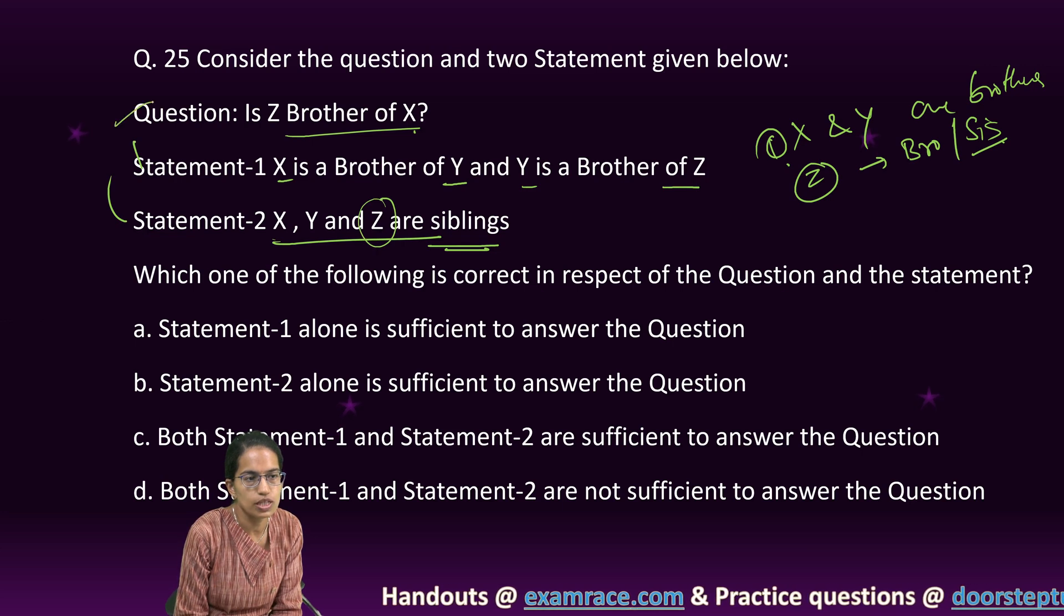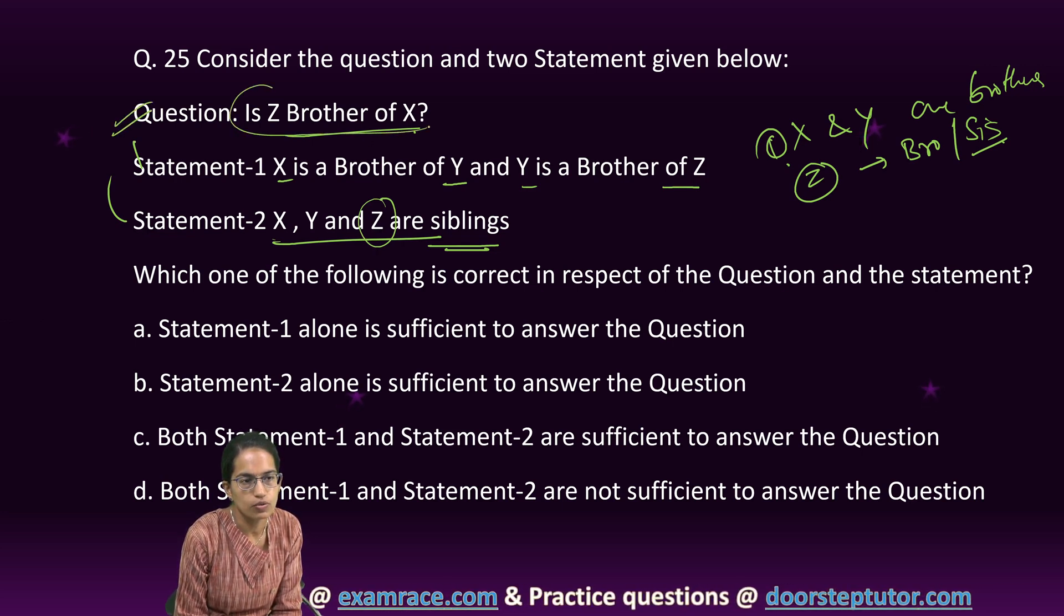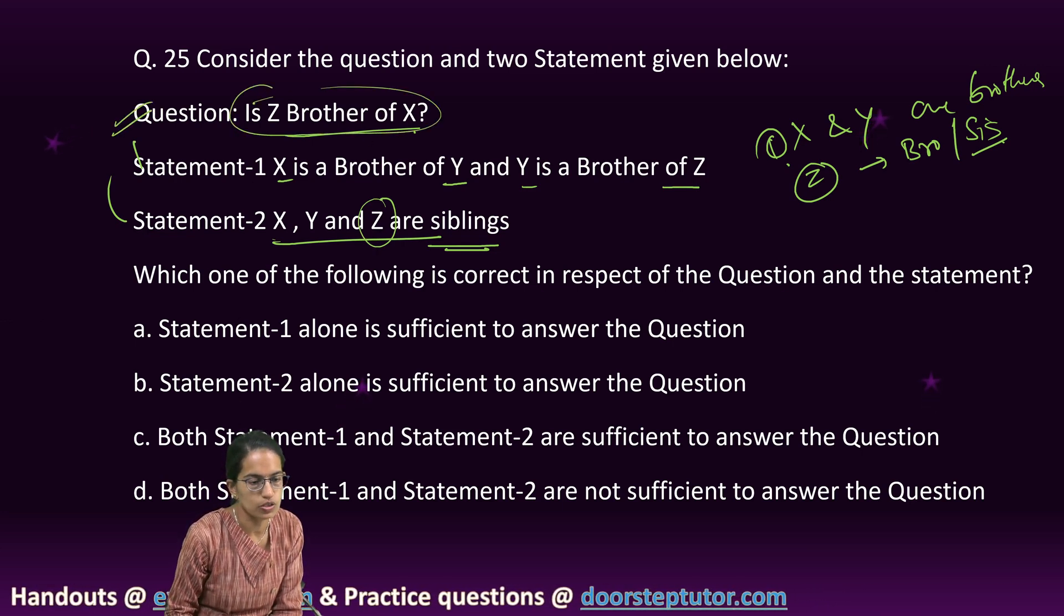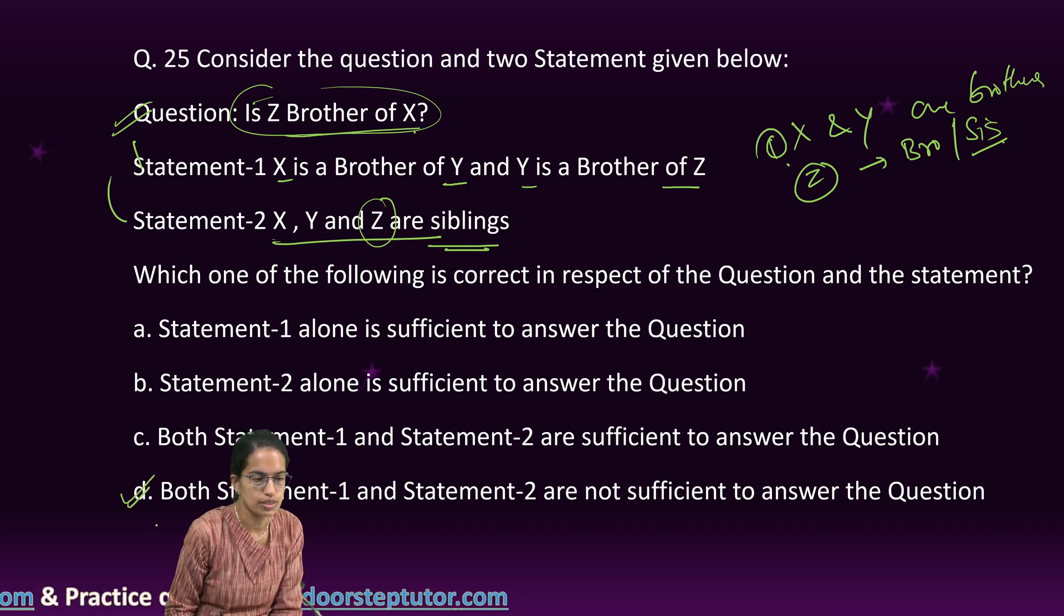Based on these two statements, we cannot answer the question whether Z is the brother of X or not. So both the statements are not sufficient to answer the question. D is the correct option.